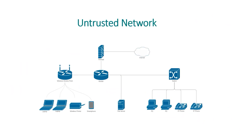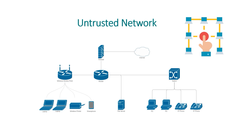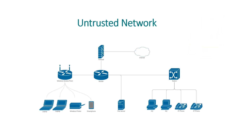An untrusted network refers to any network that is external to the networks belonging to an organization and which is outside the organization's ability to control or manage. Key point: if you cannot manage it and cannot control it, it is untrusted.